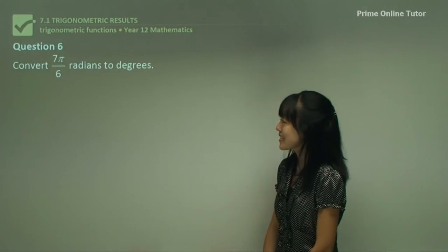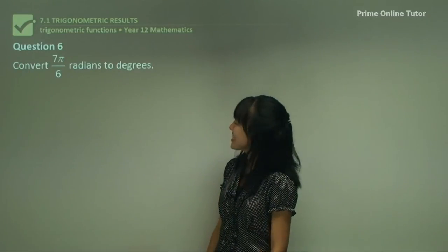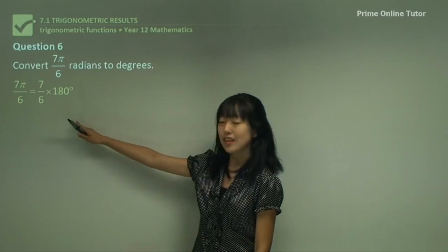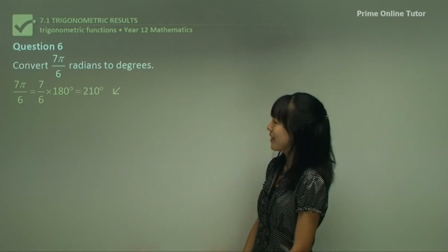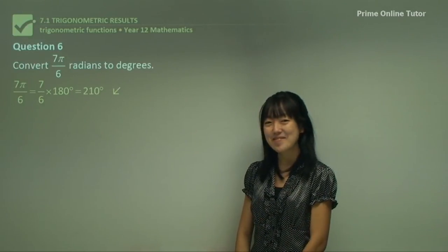Similar with question 6. Wherever you see a π, you put in 180 degrees. There we go. You get this and when you put that in the calculator you get a simple answer of 210 degrees. Excellent.